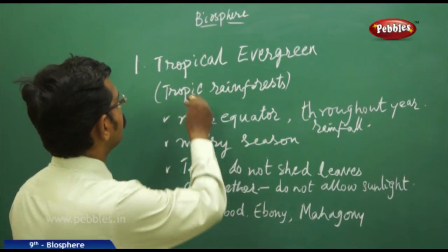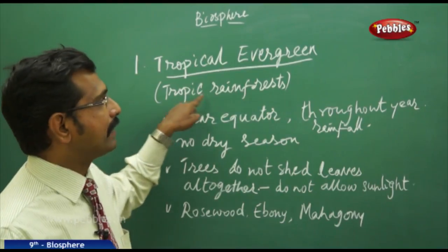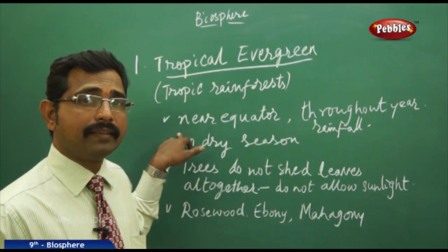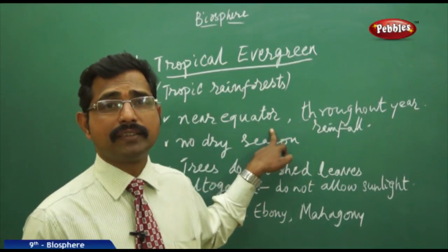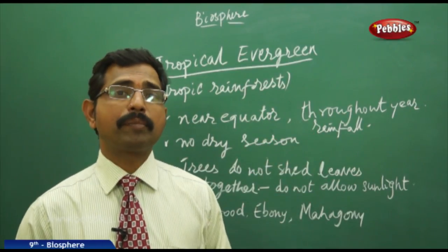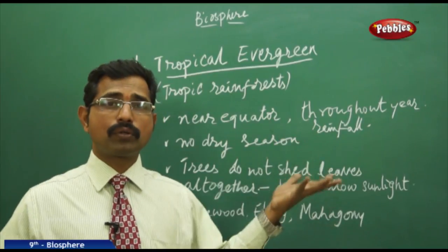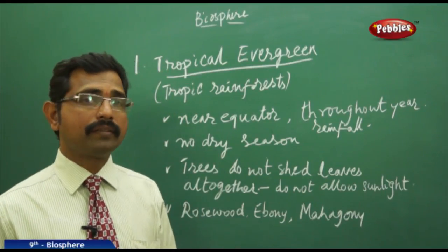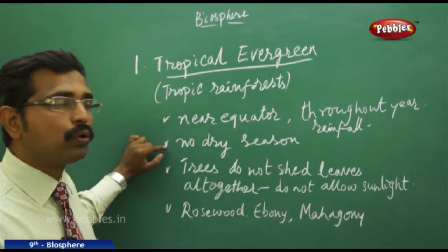We now discuss the tropical evergreen forest. Tropical evergreen forests are also known as tropical rainforests — the word itself says rains are heavy. This kind of forest occurs usually near the equator, where rainfall is heavy throughout the year. Every day they get water, sunlight is good, and temperature is also high, so plants grow into very healthy trees in the tropical part of the globe.